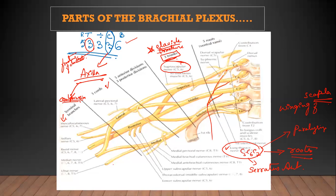Suprascapular nerve damage can result in loss of abduction. If a patient cannot lift his arm even 0 to 15 degrees, it suggests a clavicle fracture that damaged the suprascapular nerve. However, this happens only in people whose clavicle is pierced by the suprascapular nerve — in others, it goes over the top. In those people, if the clavicle is fractured, the nerve gets compressed.